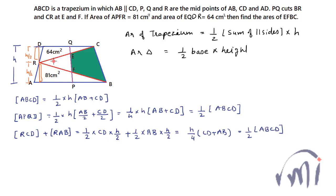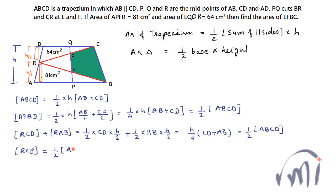Since the sum of areas of triangles RCD and RAB is half of the area of trapezium ABCD, the area of the remaining triangle RCB is also equal to half of the area of trapezium ABCD. Let's revisit the drawing.